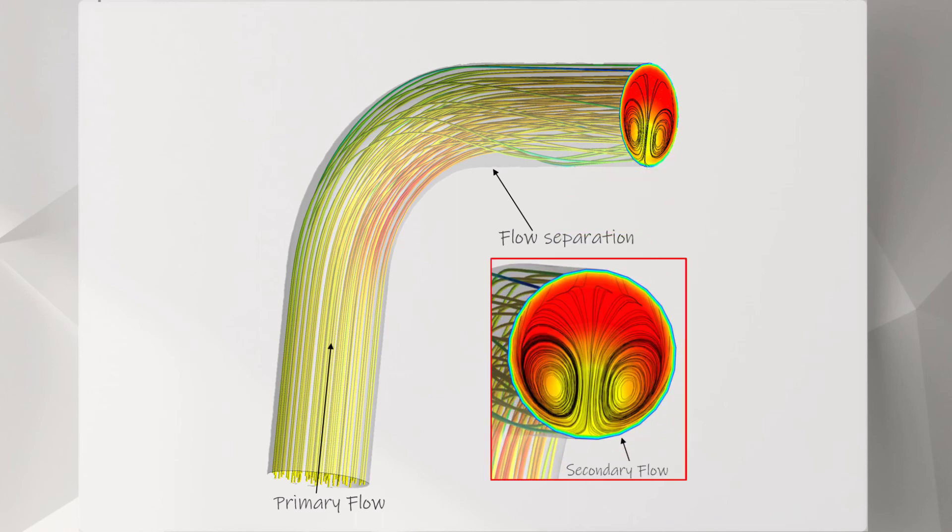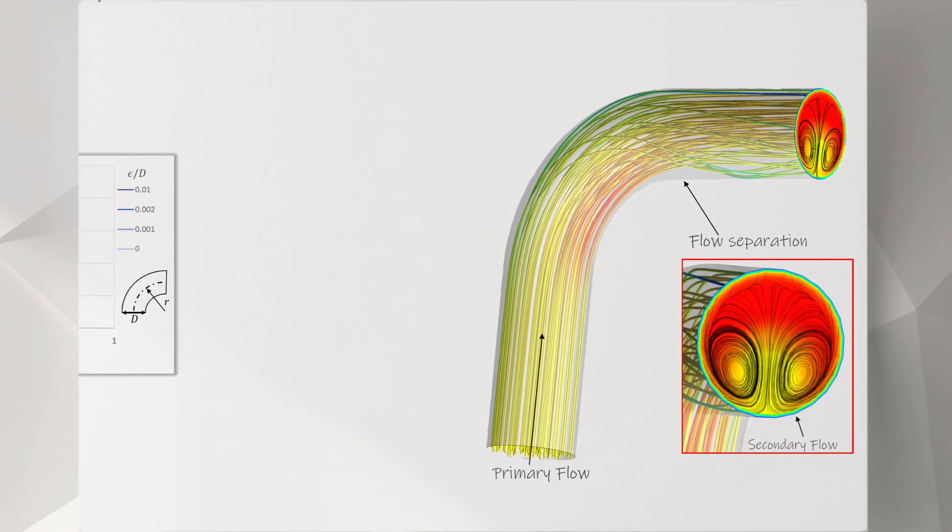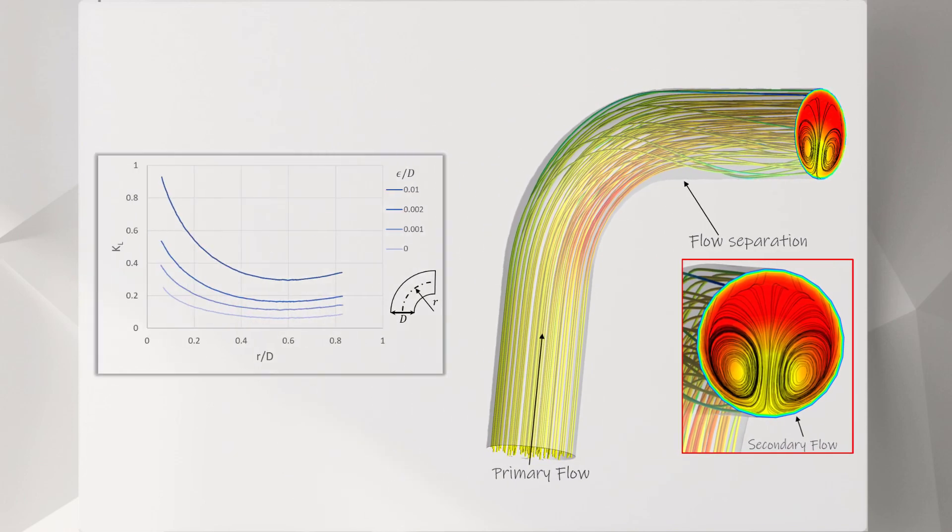The secondary flow describes a motion of the fluid on the plane normal to the primary flow direction. The primary and secondary motions happen simultaneously as the flow passes through the bend. The plot shown here reports the trend of the friction factor as a function of the curvature radius and the pipe diameter.